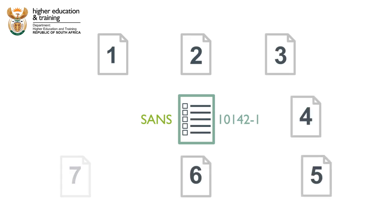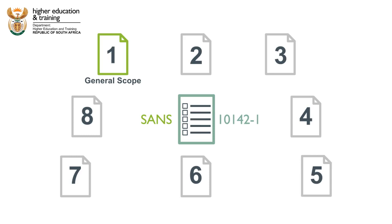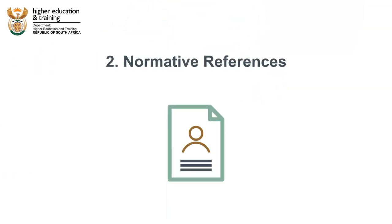SANS 10142-1 has eight sections. Clause 1 explains the general scope of the codes — in other words, what they cover and don't cover. Clause 2 lists normative references. These are references to other applicable codes and regulations.